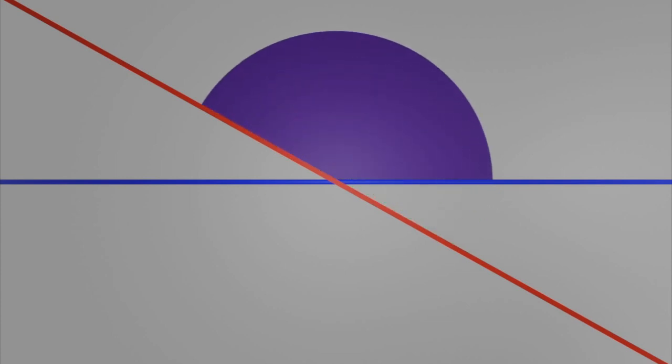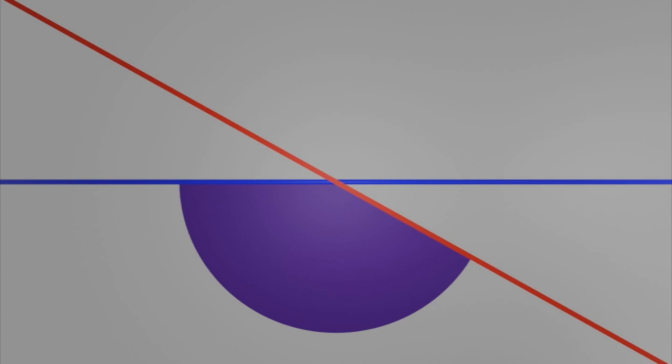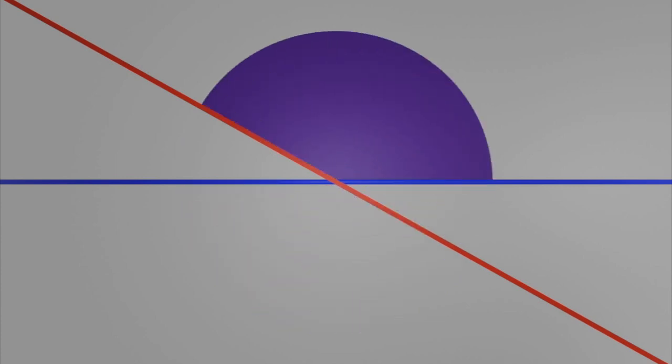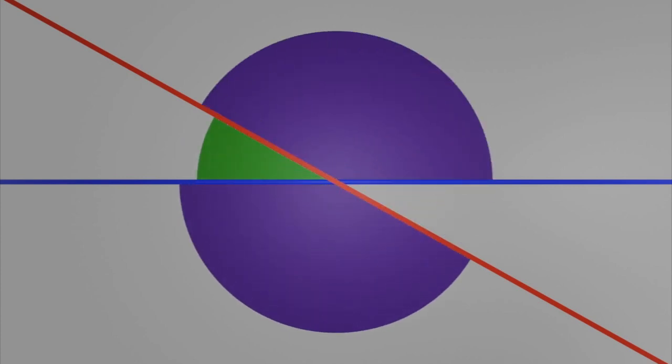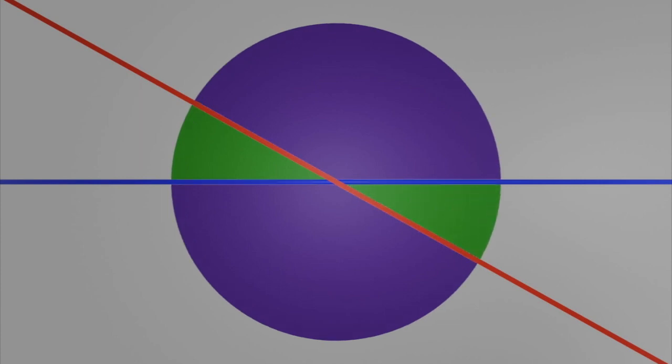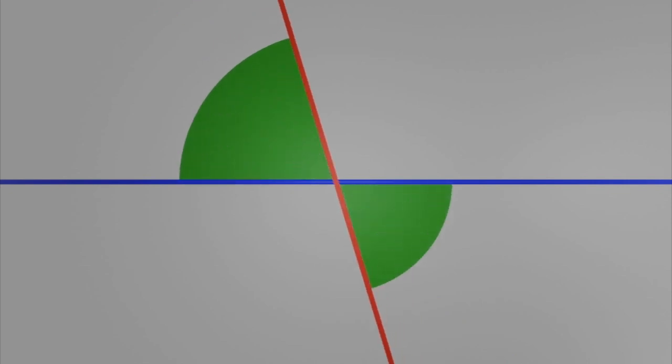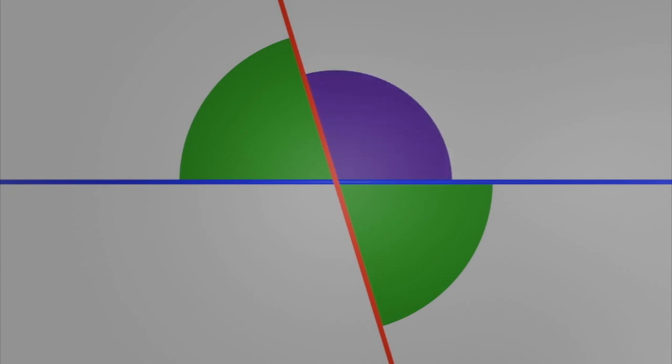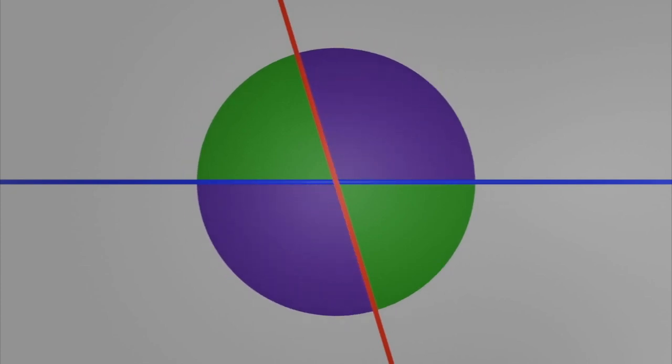If I rotate the red line, you'll see that this angle is equal to the opposite angle, just like this angle is equal to this angle. As I mentioned before, all four of these angles add up to 360 degrees. It doesn't matter how I rotate the red line — the opposite angles always equal each other and add up to 360 degrees.